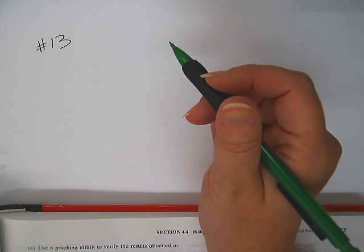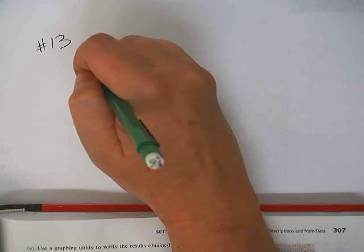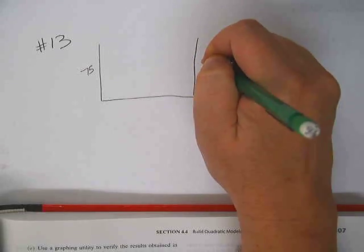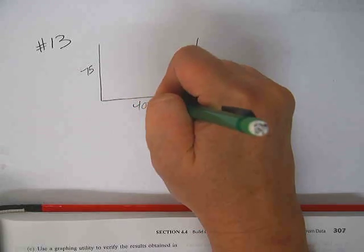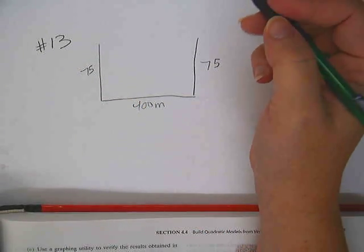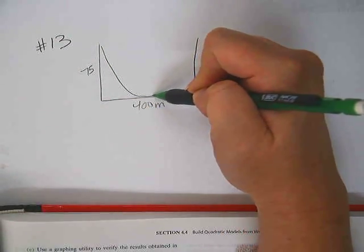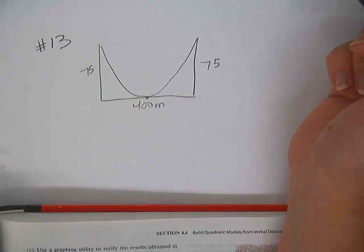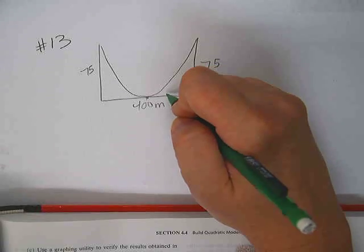Okay, first let's create a picture. So a suspension bridge with weight uniformly distributed along its length has twin towers that extend 75 meters above the road surface and are 400 meters apart. The cables are parabolic in shape and are suspended from the tops of the towers. The cables touch the road surface at the center of the bridge. Find the height of the cables at a point 100 meters from the center.